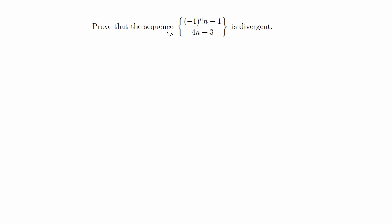In this video I'm going to prove that the sequence given here is divergent. There's more than one way to prove that a sequence diverges. One way is to use the definition of how a sequence converges and arrive eventually at a contradiction, whereby you can conclude that because the definition of convergence leads to or results in a contradiction, the sequence therefore is divergent.